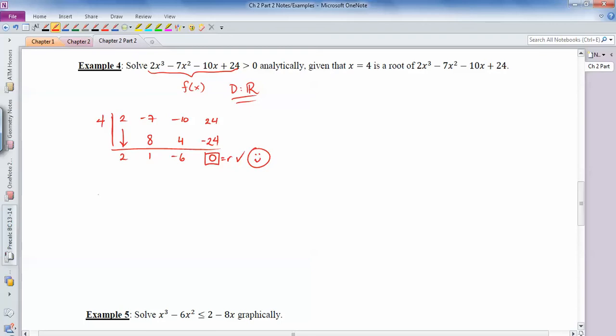So now I can write f of x as x minus 4 times 2x squared plus x minus 6. And 2x squared plus x minus 6, if you can't factor it by hand, you could use quadratic formula to help you as long as you forget that leading coefficient. Otherwise, if you do see how to factor it by hand, it turns into 2x minus 3, and x plus 2.